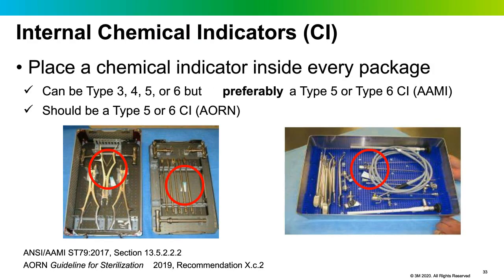OR staff check the internal chemical indicator placed inside every package. ST-79 now recommends the preferred use of a Type 5 or Type 6 indicator. Type 6 emulating indicators are labeled for specific cycles, while Type 5 integrating indicators typically have broader indications and most facilities find them the most practical choice. AORN states that the internal chemical indicator should be read and interpreted before the tray or item is placed on the sterile field. If a pass result hasn't been achieved, you reject the tray.